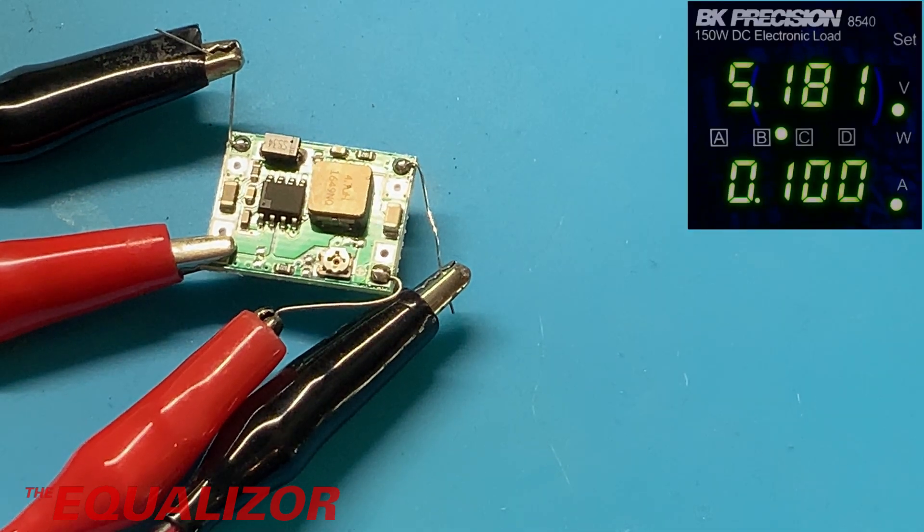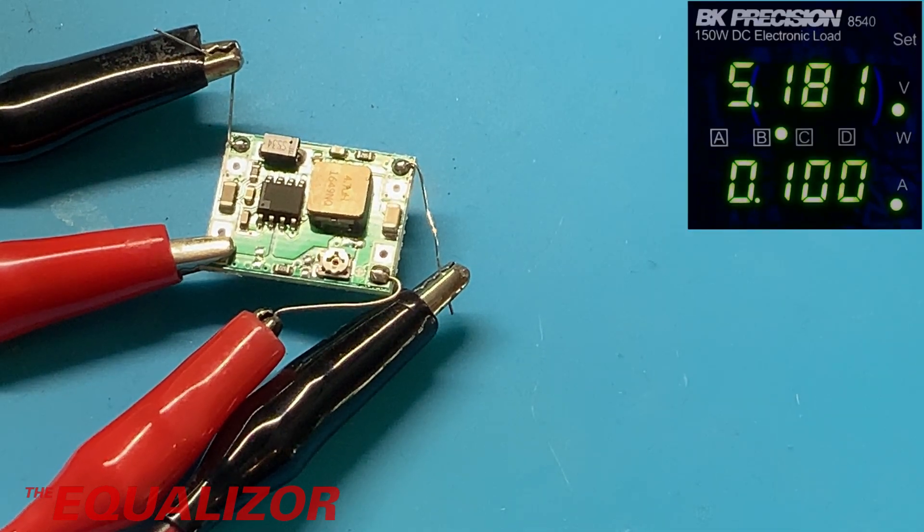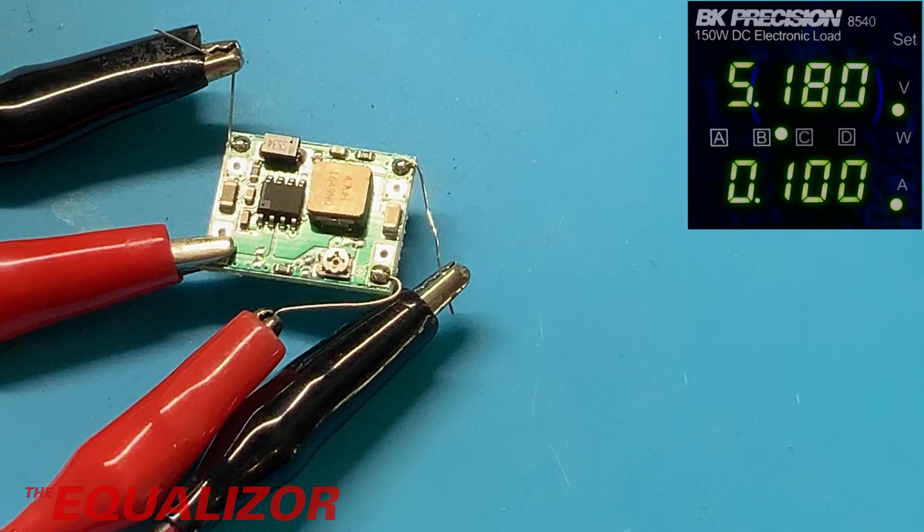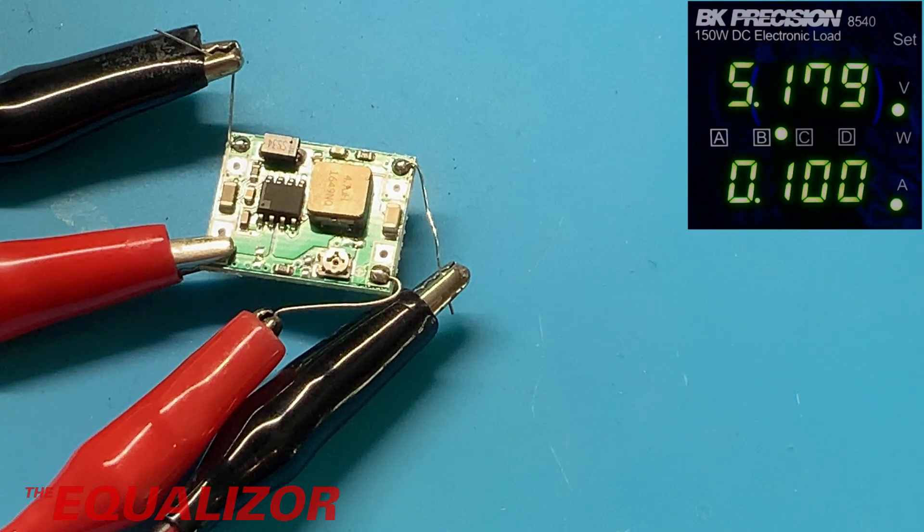So we have set the digital load to 100 milliamps and I've set the DC to DC buck converter to 5 volts and that looks pretty good actually. It's got to be between ideally 4.75 to 5.25 volts so 5.1 is fine and it seems to be regulating well at 100 milliamps.